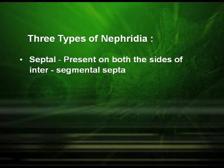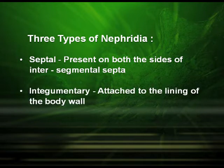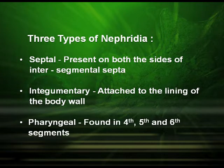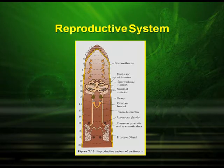The septal nephridia are present on both sides of the intersegmental septa. The integumentary nephridia are attached to the lining of the body wall. The pharyngeal nephridia are found in the fourth, fifth, and sixth segments.